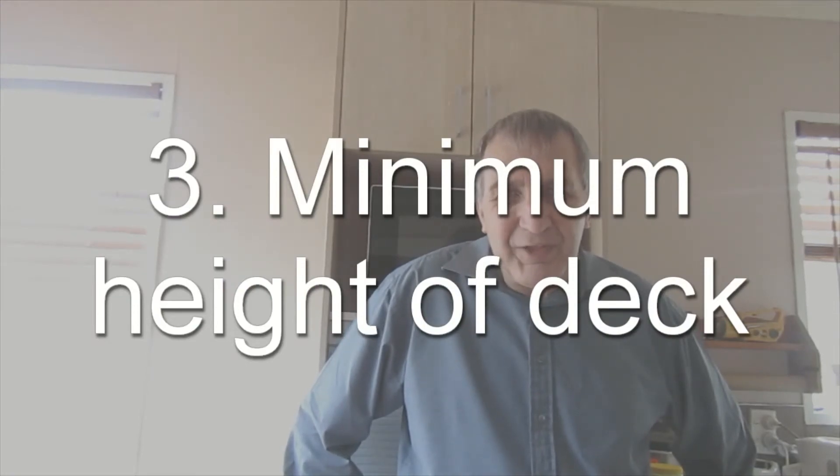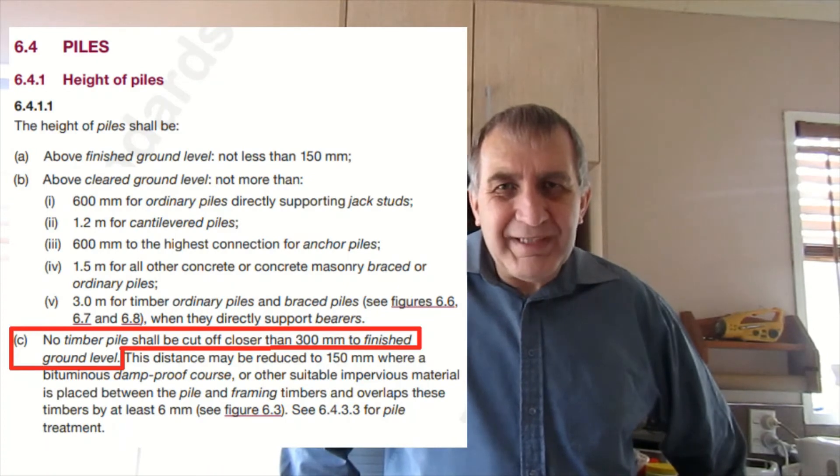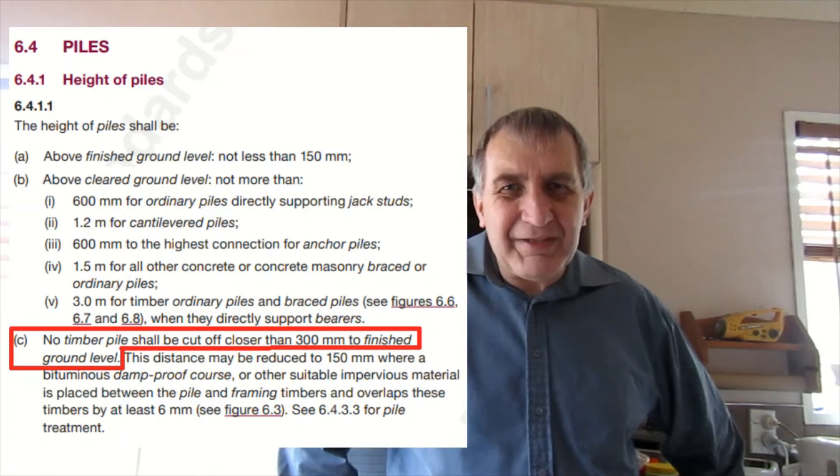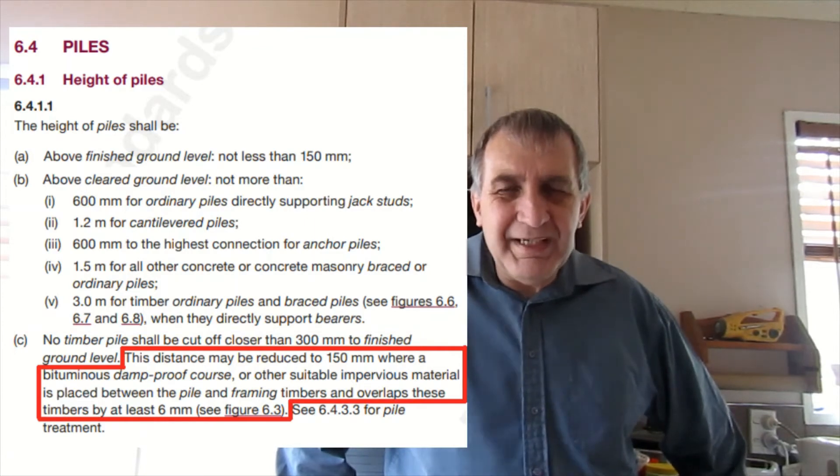The minimum height of an anchor pole is determined by clause 6.4.1.c. This is 300 millimeters but if you're using a damp proof course this can be reduced down to 150 millimeters.